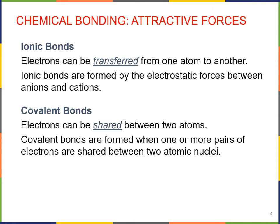The second major type of chemical bonds are covalent bonds. Covalent bonds form when electrons are shared between two atoms, rather than transferred from one atom to another. Covalent bonds are formed when one or more pairs of electrons are shared between two atomic nuclei.